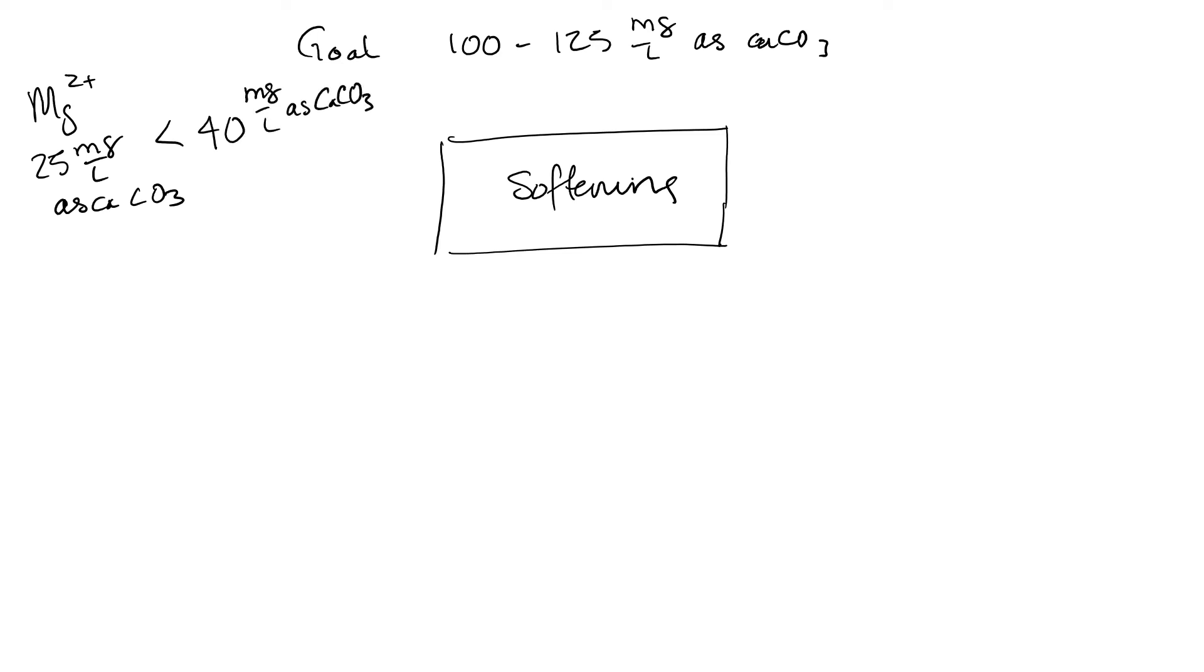Now, in the previous slide, we looked at, again, we have this goal of 100 to 125 milligrams per liter as calcium carbonate. In our softening unit, we softened to the practical limits. But think about this: our magnesium concentration is 25 milligrams per liter as calcium carbonate. That is significantly less than the 40 milligram per liter cutoff that we have based on where magnesium tends to be problematic in the distribution system.